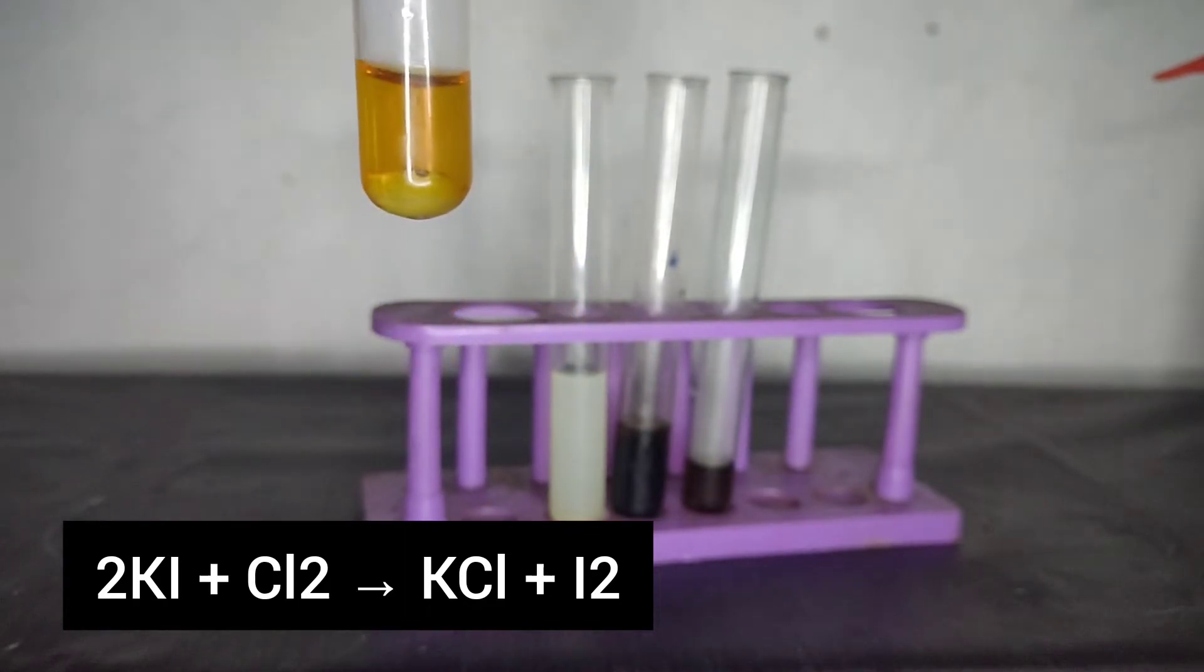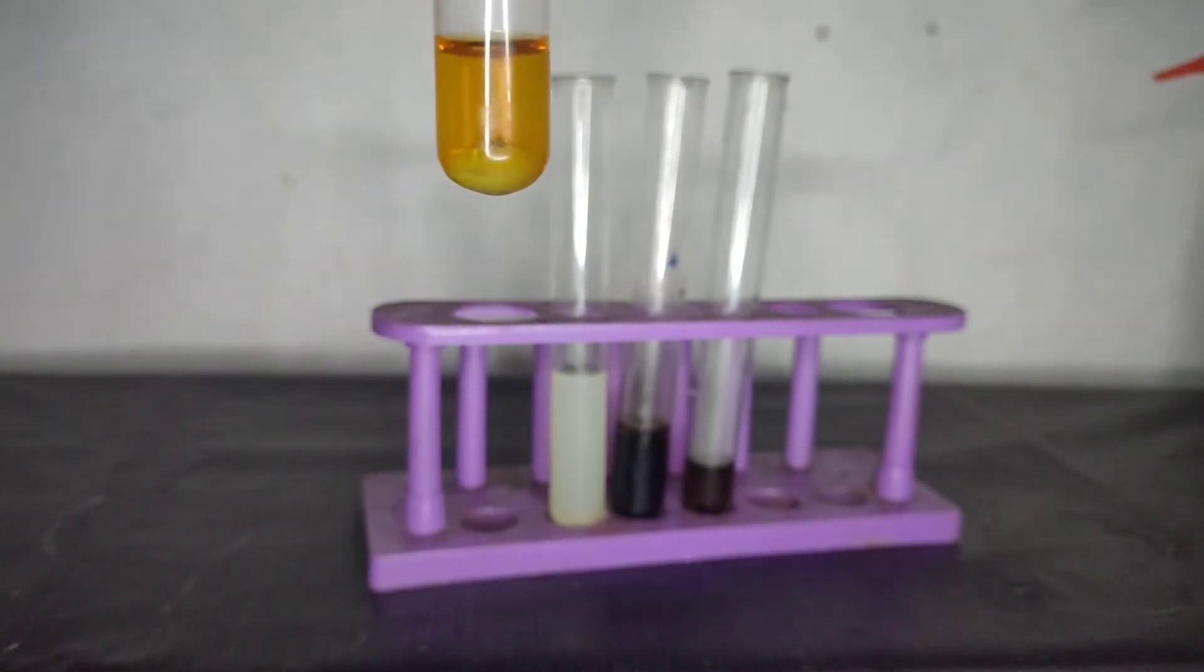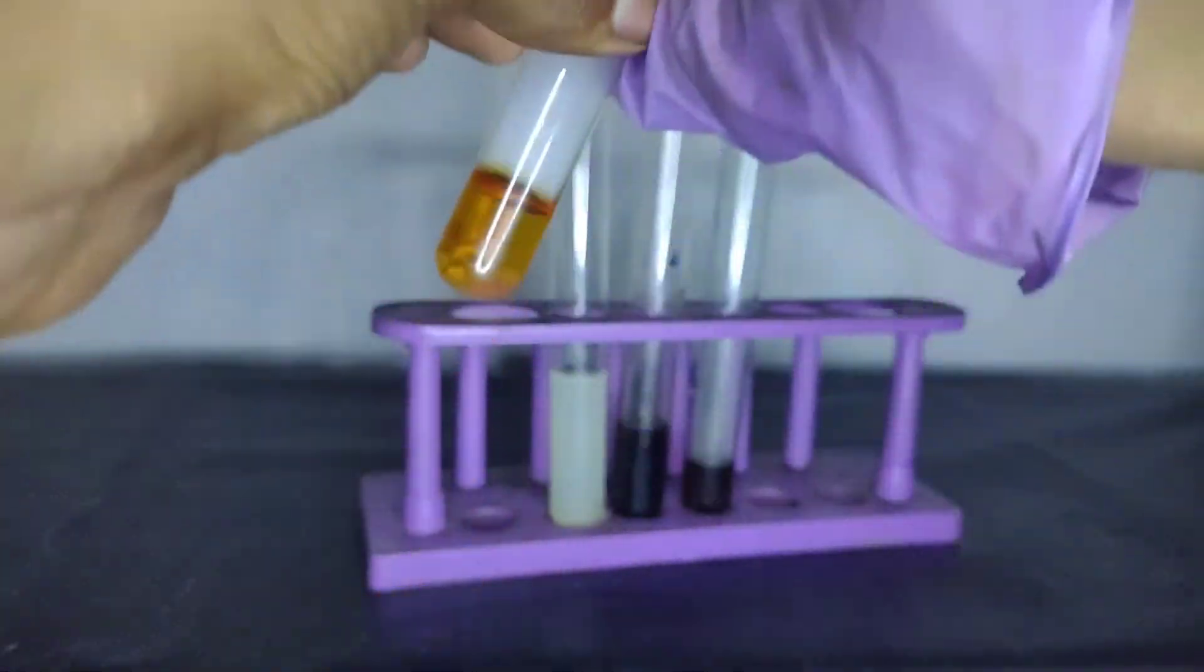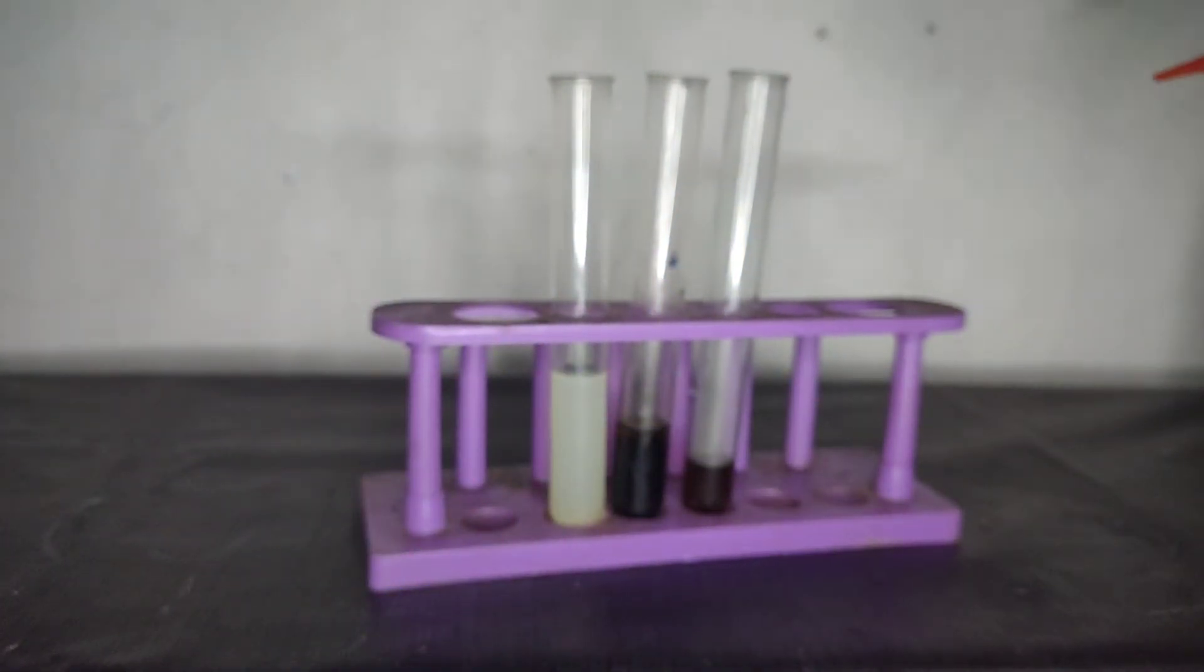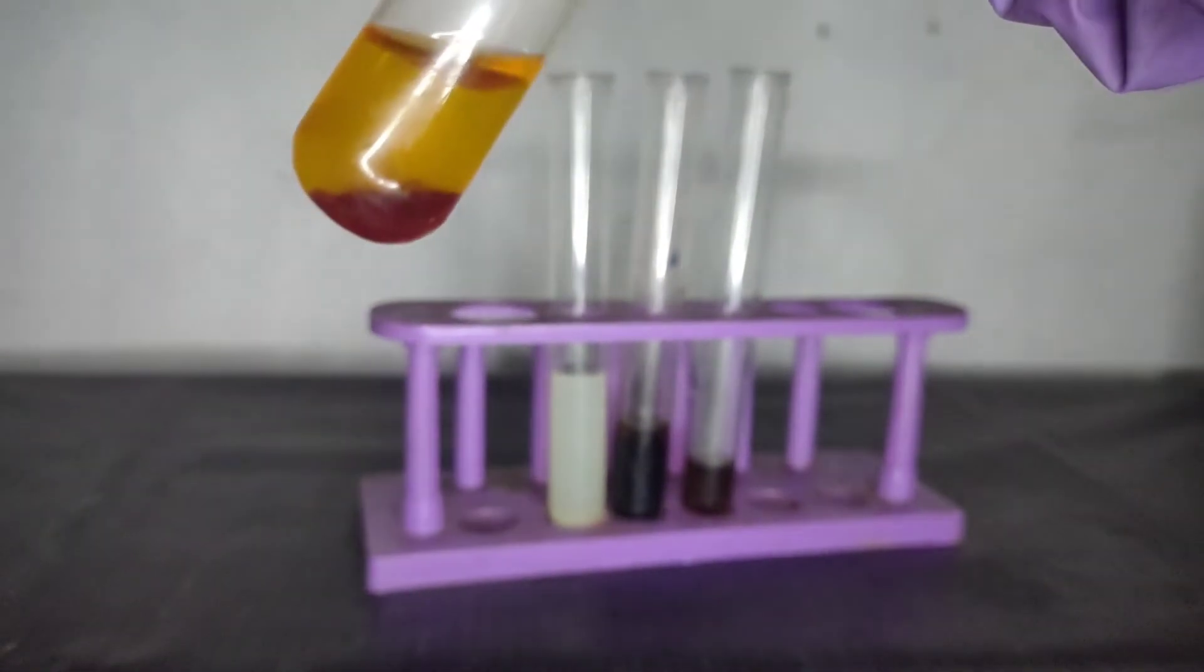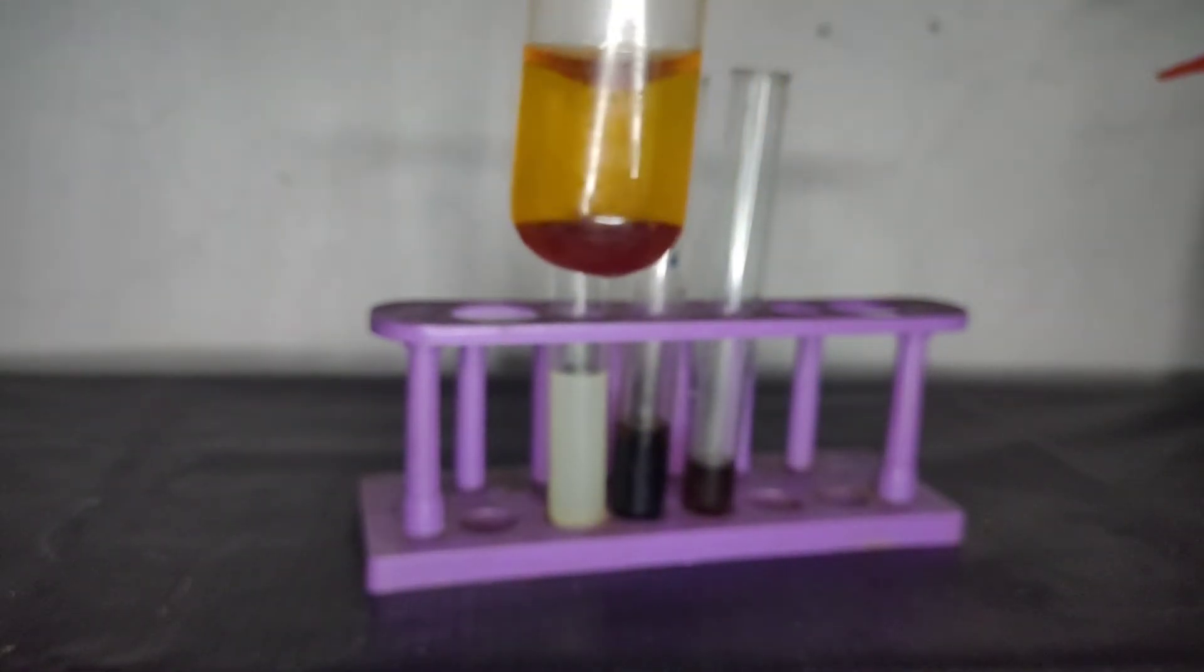You can see that on adding chlorine water the solution acquires a brown color. Now just put your thumb at the mouth of the test tube and give it a vigorous shake. You can see that the color of the organic layer that was chloroform is now violet in color.